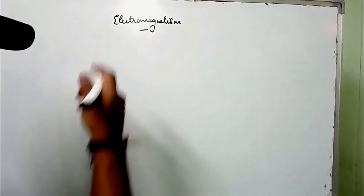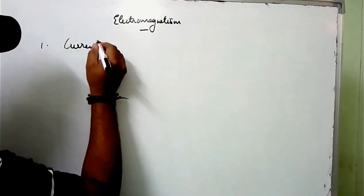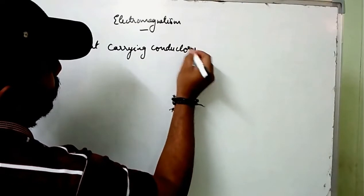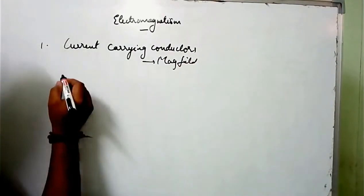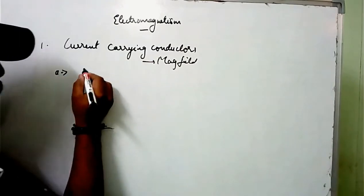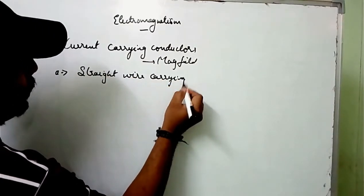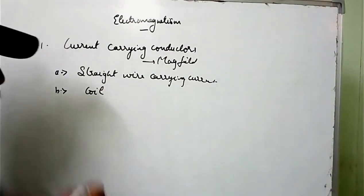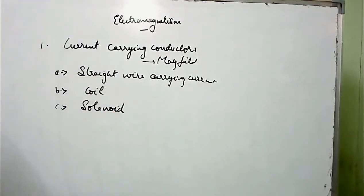Hi everyone, welcome back. So we were discussing about Electromagnetism. Today we will be going to learn about current carrying conductors. We will be considering three cases: first one is a straight wire carrying current, second one will be a coil, and third one will be our solenoid. Let's see the first one — straight wire carrying current.